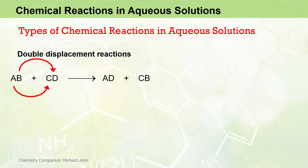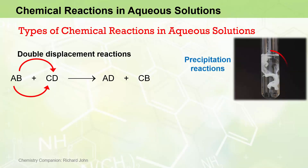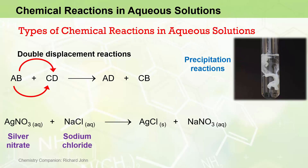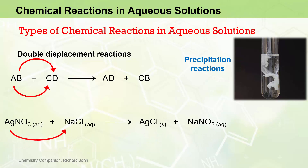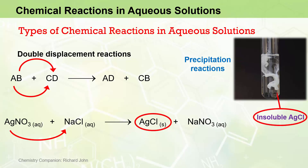One of the most important types of double-displacement or metathesis reactions are precipitation reactions, where we see the formation of an insoluble salt resulting from the mixing of two aqueous solutions. A classic example is the reaction of an aqueous silver nitrate solution with an aqueous sodium chloride solution to produce a solid silver chloride precipitate plus aqueous sodium nitrate. The silver cation from the silver nitrate solution displaces the sodium cation from the sodium chloride solution to form the solid silver chloride, which precipitates out as an insoluble white salt.